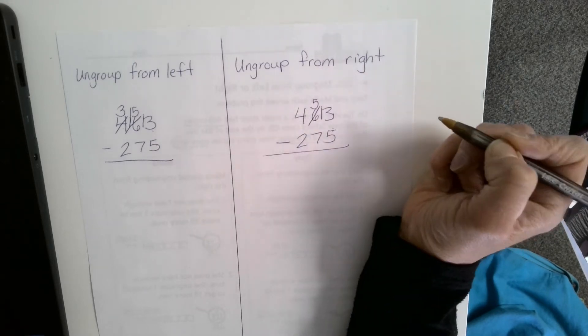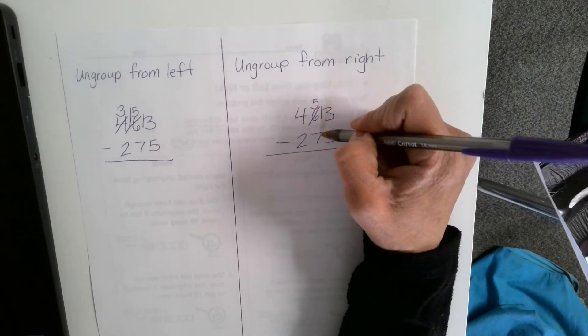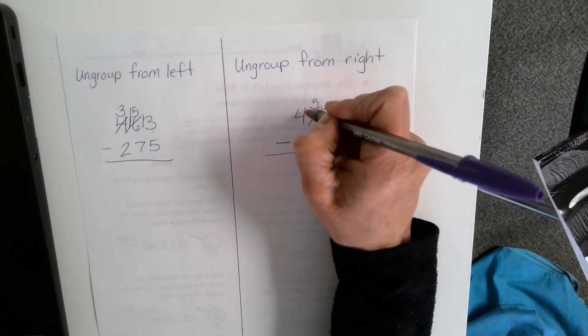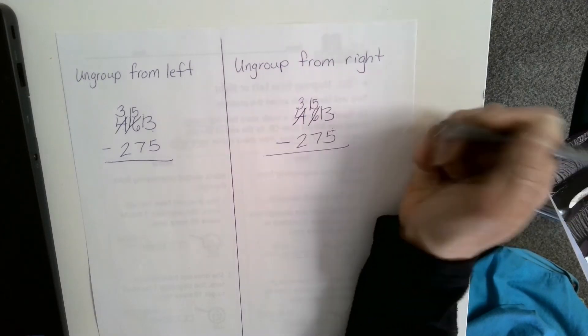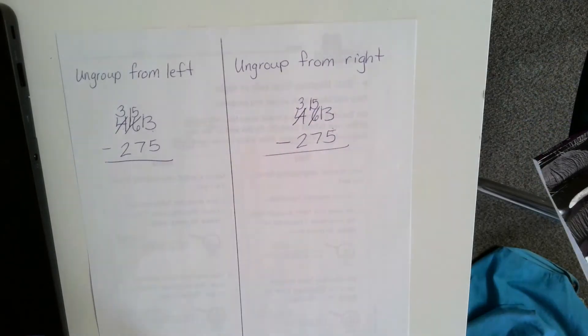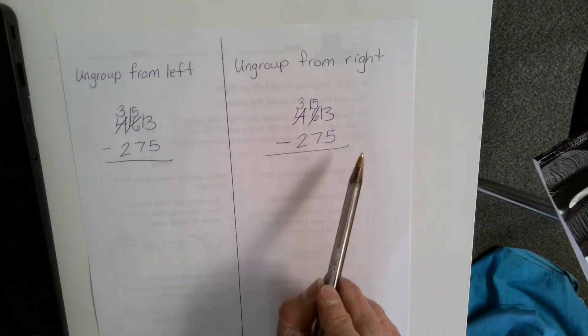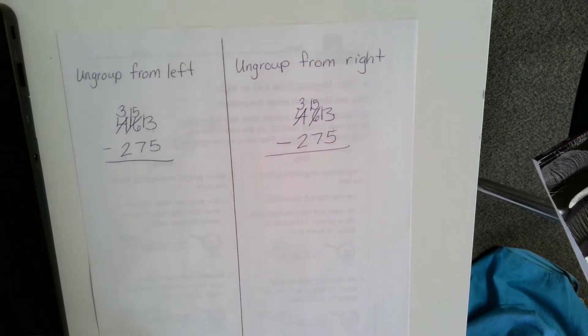Now I have a new 10. Then I'm going to see, can I do 5 minus 7? I can't. 5 is smaller than 7. So I need to make a new group. I'm going to cross out the 4, make it a 3, and add that 10 here to the tens place. So now I have 15 minus 7. If you notice, we ended up with the same thing on top. It didn't really matter if we moved from left to right or from right to left.